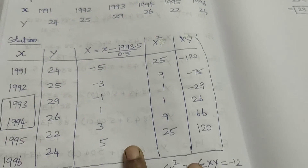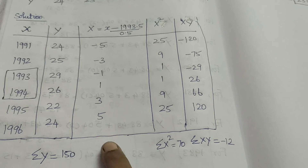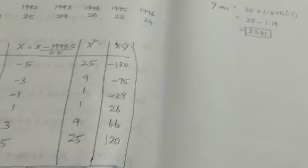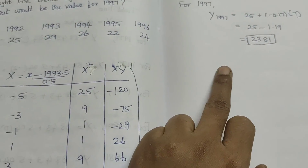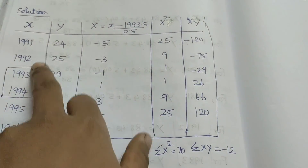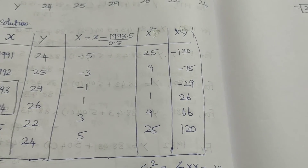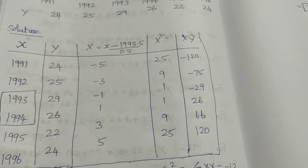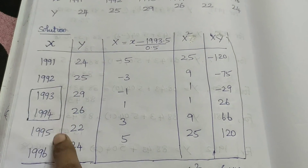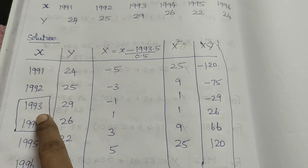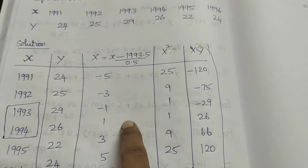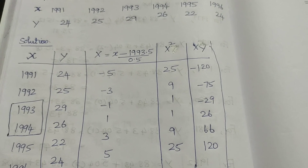You can easily calculate and obtain the trend values. In this session, we discussed the straight line trend by the method of least squares in order to solve the problem using event data. Hope you will be able to solve the problem. Thank you so much.